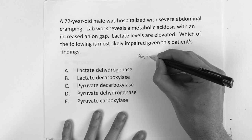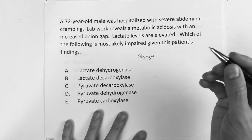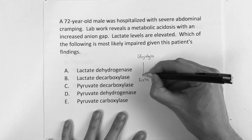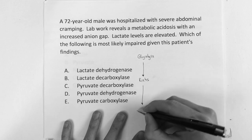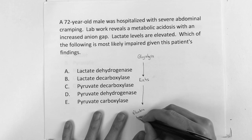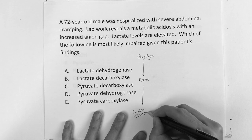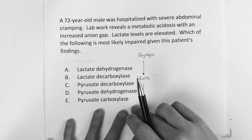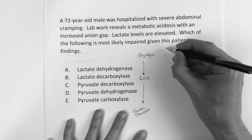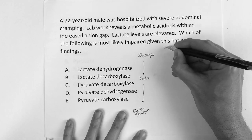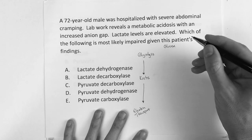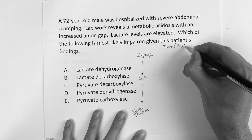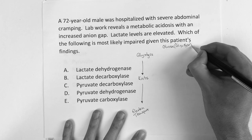From 30,000 feet away, we want to say that you're trying to make energy. So you've got glycolysis, which heads to Krebs, which heads to electron transport. That's the big picture. So now you just ask: what's important in this whole process that I've got to know to get these kinds of questions right?